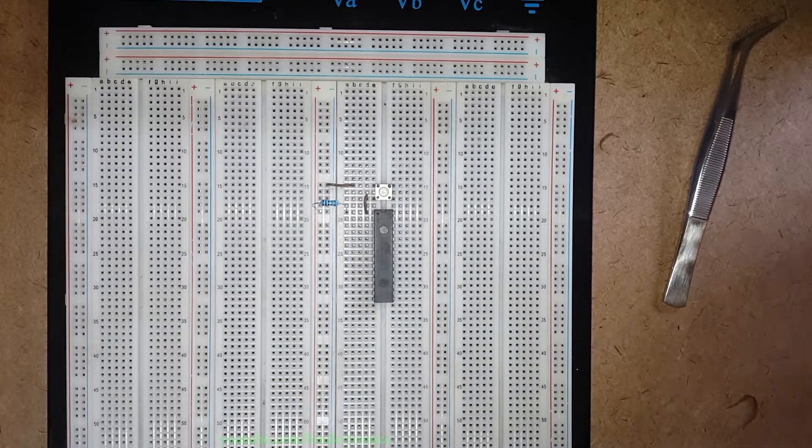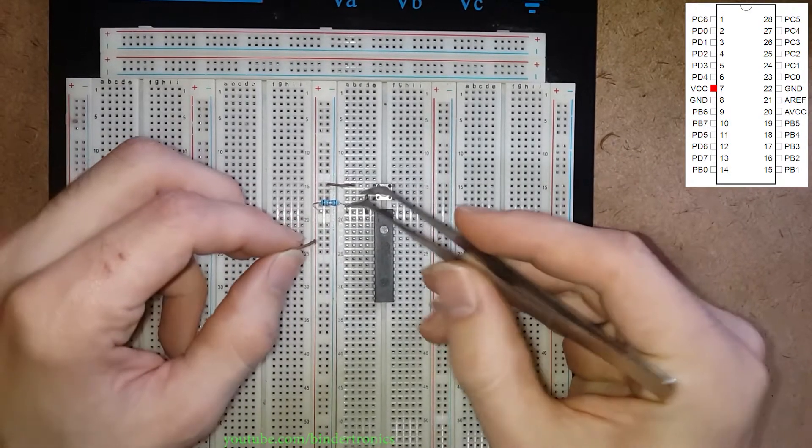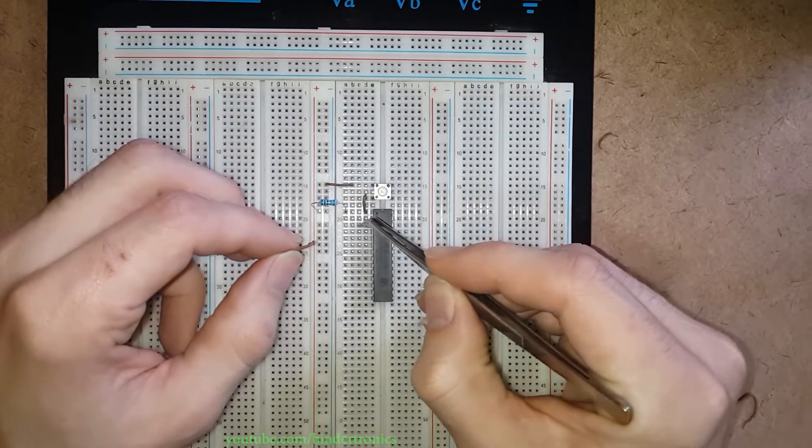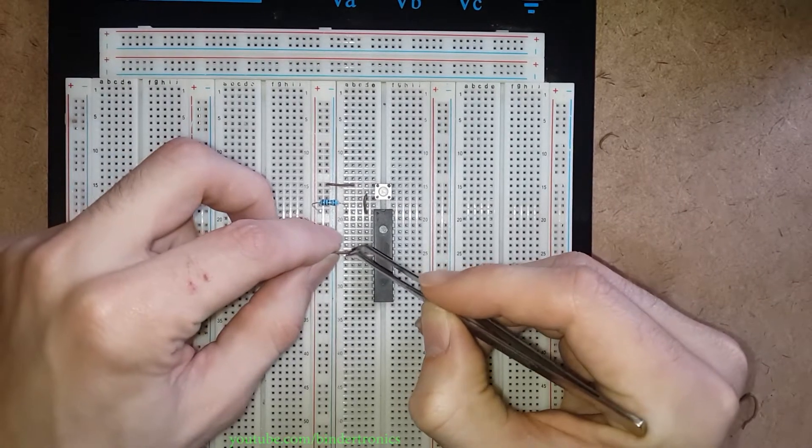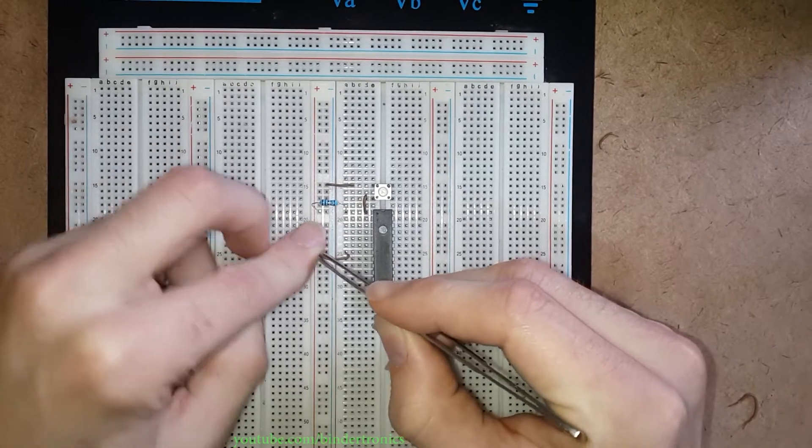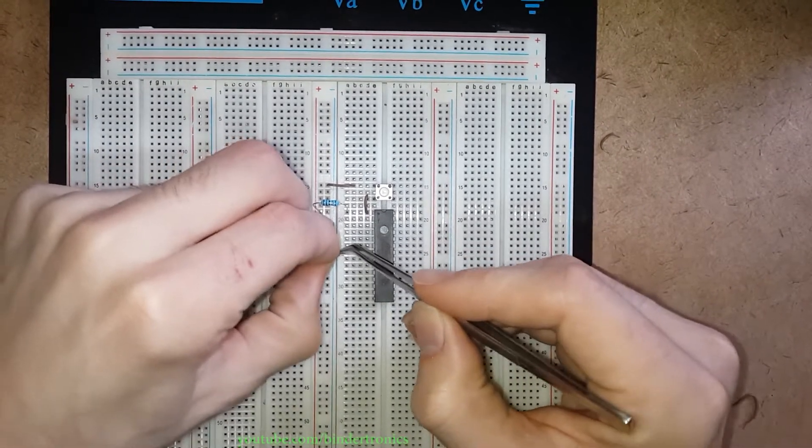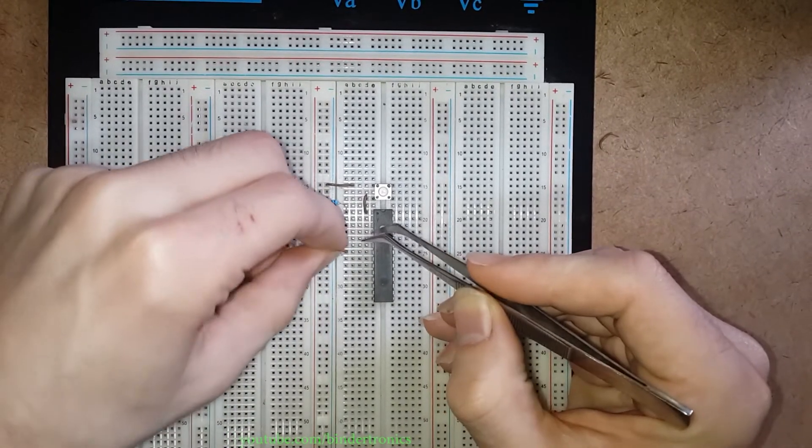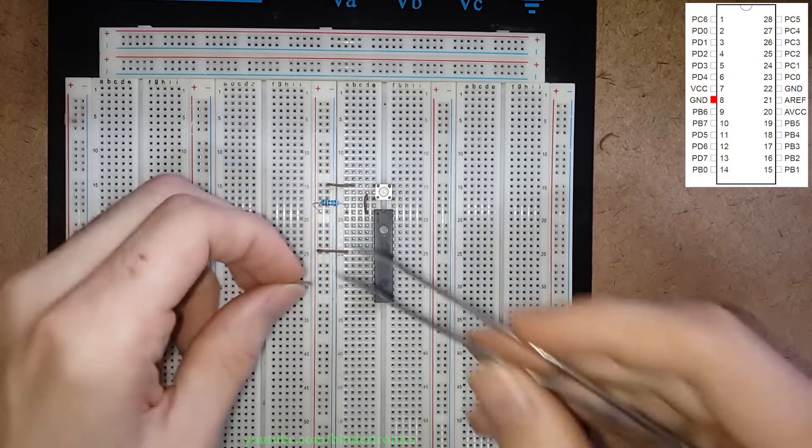Then we have pin 7 which is VCC. So we check here 1, 2, 3, 4, 5, 6, 7. So at 25, we jump over to VCC which is 5 volts, so the red rail.